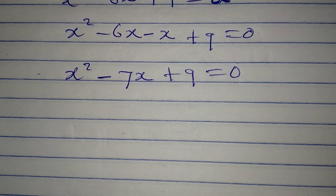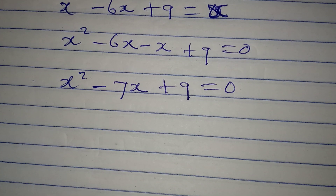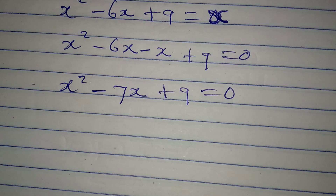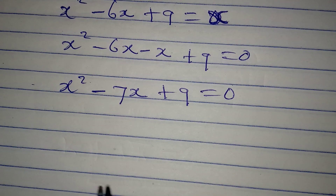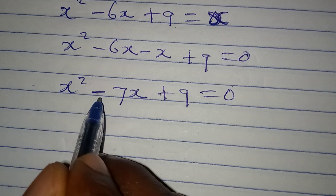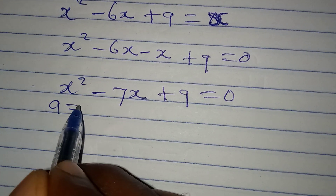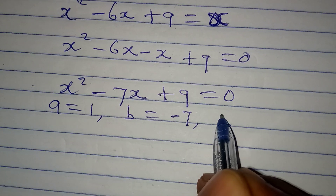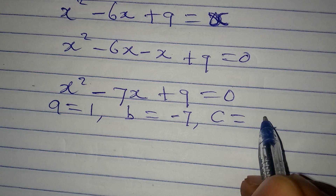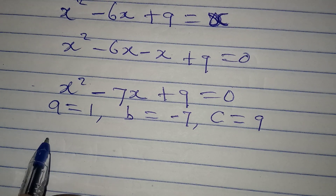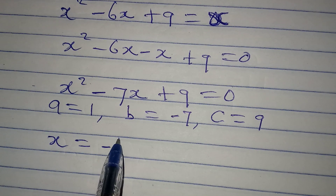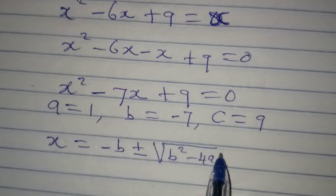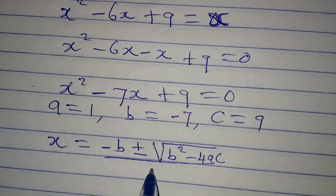We have a quadratic equation to solve. We may not be able to factorize this — in fact, we can't factorize this. But we can use the formula method to solve this. If you're going to use formula method, a is the coefficient of x squared, which is 1. b is the coefficient of x, which is minus 7. And c is the constant, which is 9. The formula is x equals minus b plus or minus square root of b squared minus 4ac, all over 2a.